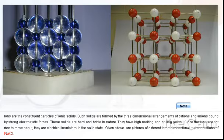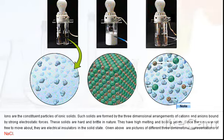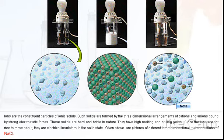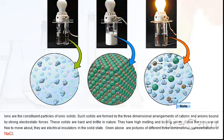Ionic solids. Ions are the constituent particles of ionic solids. Such solids are formed by the three-dimensional arrangements of cations and anions bound by strong electrostatic forces. These solids are hard and brittle in nature. They have high melting and boiling points. Given above are pictures of different three-dimensional representations of NaCl.